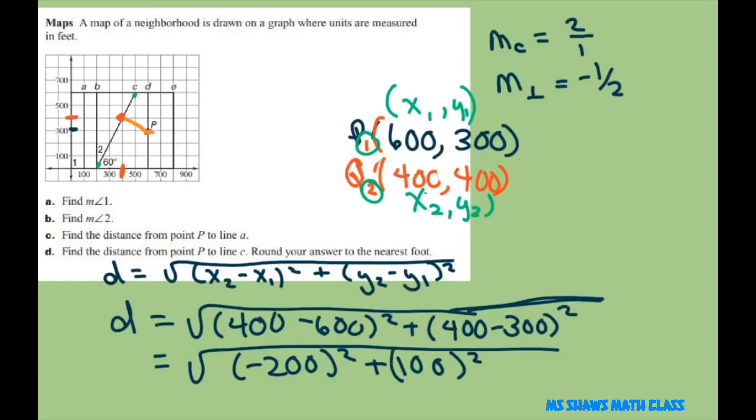When you put that in the calculator, you're going to get 224 feet. Make sure you always put this negative in the calculator, because this is really 40,000, it's not negative 40,000.